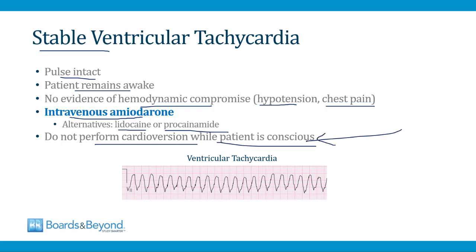This often comes up on board exams: they describe a patient with stable VT who is conscious. Even though VT is a shockable rhythm, you never shock conscious patients because it is extremely painful. The correct answer for treatment of stable VT is to administer intravenous amiodarone or another antiarrhythmic. In real life, patients with stable VT sometimes pass out, so you can wait until they lose consciousness and then shock them, or administer anesthesia like propofol first — but never shock a conscious patient.